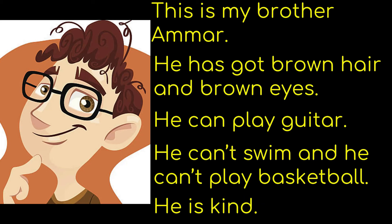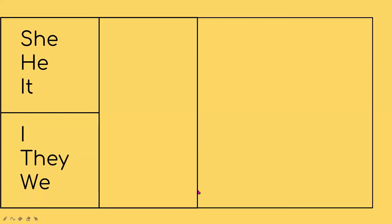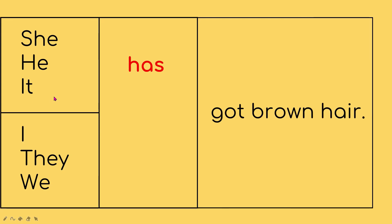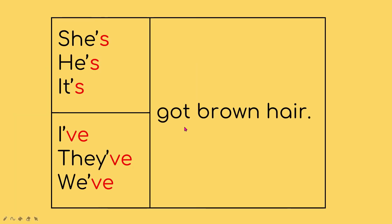Always remember: if you want to use 'has got' or 'have got,' make sure you check your subject. If the subject is one person — she, he, or it — we put 'has.' For example: 'She has got brown hair,' 'He has got brown hair,' 'It has got brown hair.' If the subject is yourself or others — I, they, or we — we use 'have': 'I have got brown hair,' 'They have got brown hair,' 'We have got brown hair.' If you shorten these, it becomes: she's got, he's got, it's got, I've got, they've got, we've got.